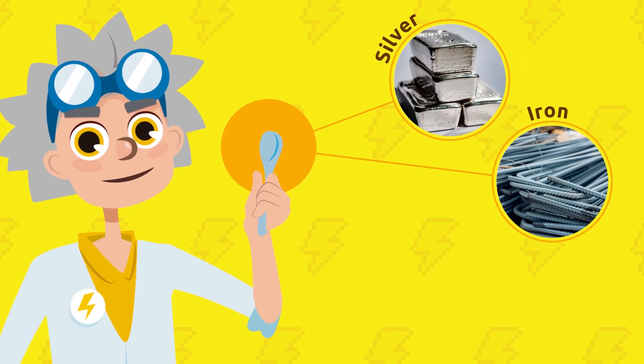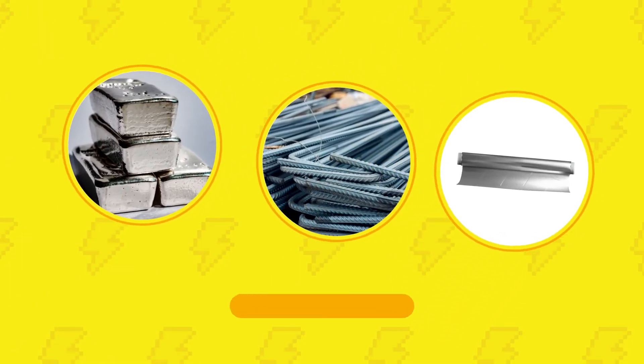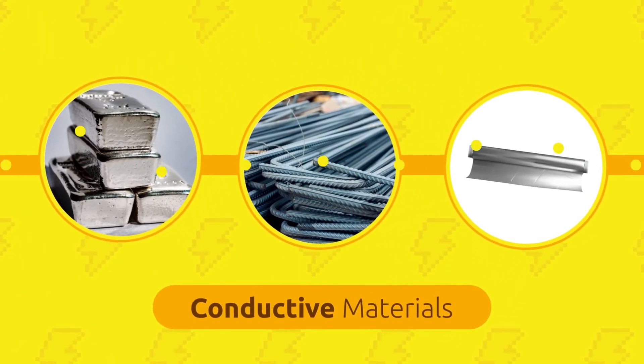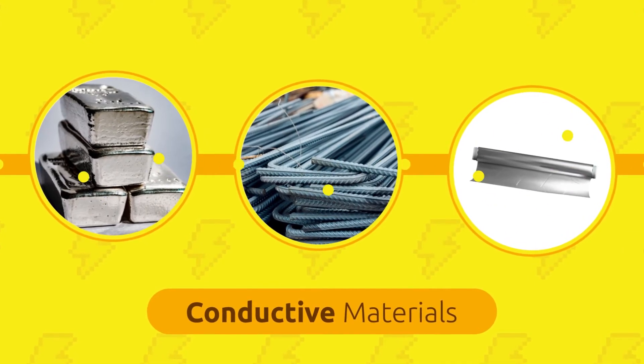Silver, iron, or aluminum are examples of conductive metals. Conductive materials allow electrical charges to flow through them, and therefore are the best materials to add to an electrical circuit.